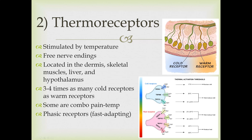Some thermoreceptors are combination pain and temperature receptors at the extremes. An interesting fact: capsaicin, the compound in chili peppers that gives spicy food its kick, actually causes TRPV1 channels to open—activating one of your combination heat-pain receptors. This is why eating spicy food feels hot. Some people enjoy this sensation and eat lots of spicy food; others do not.